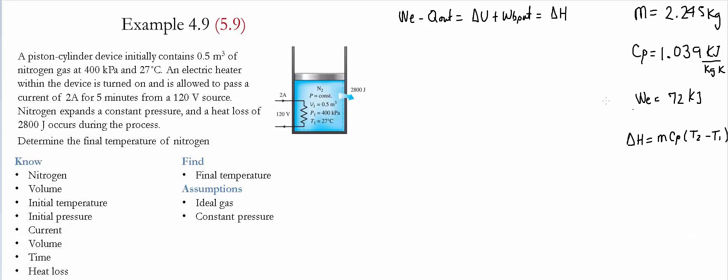Now that we have all the information, we substitute back into this equation: 72 kilojoules, which is the work done by the electrical heater, minus 2800 joules of heat leaving. We convert it by dividing by a thousand to make it into kilojoules to ensure the units are consistent.